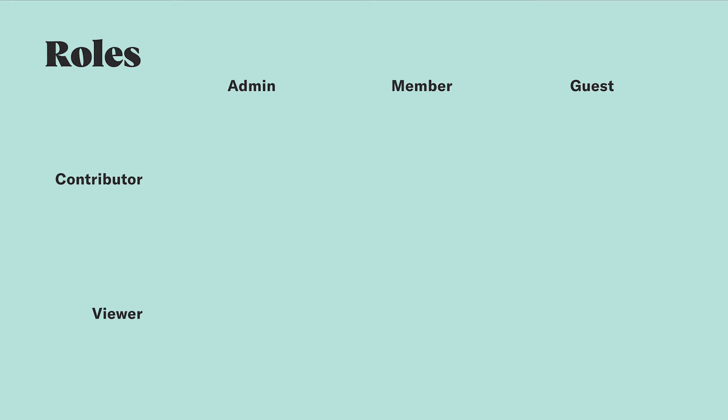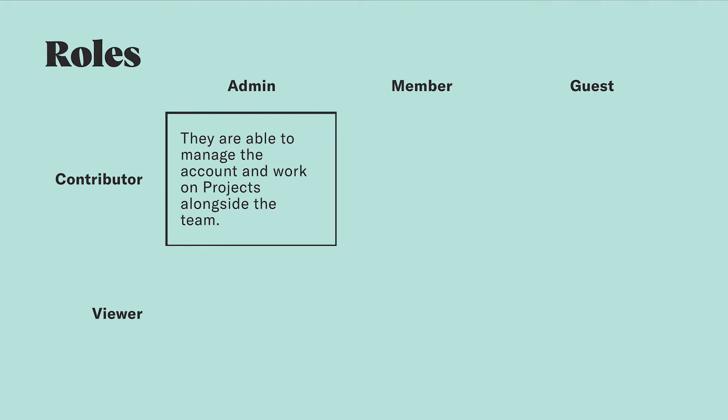With this matrix, let's see how each of these seats and roles combine to create specific sets of permissions in Abstract. An admin contributor is someone who can help manage your Abstract organization, but also has access to work on design projects with the team. This could be someone like a design manager or team lead.